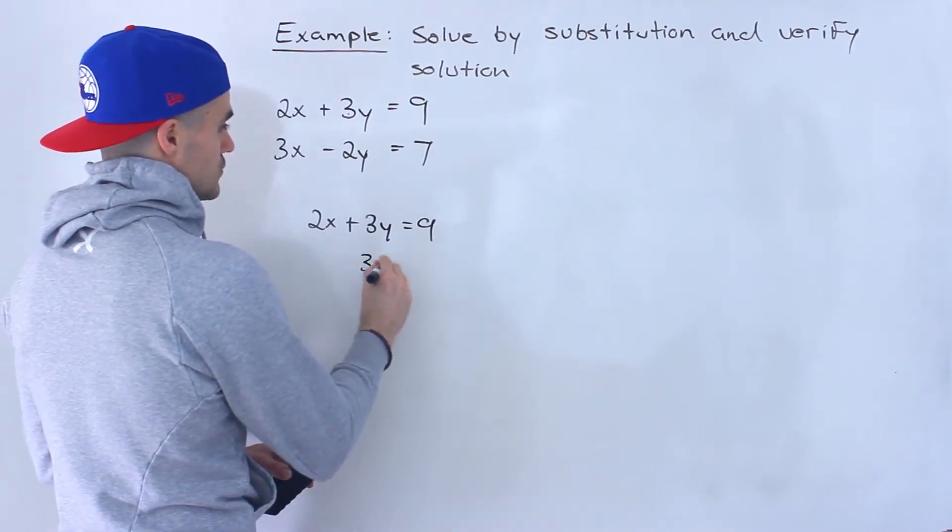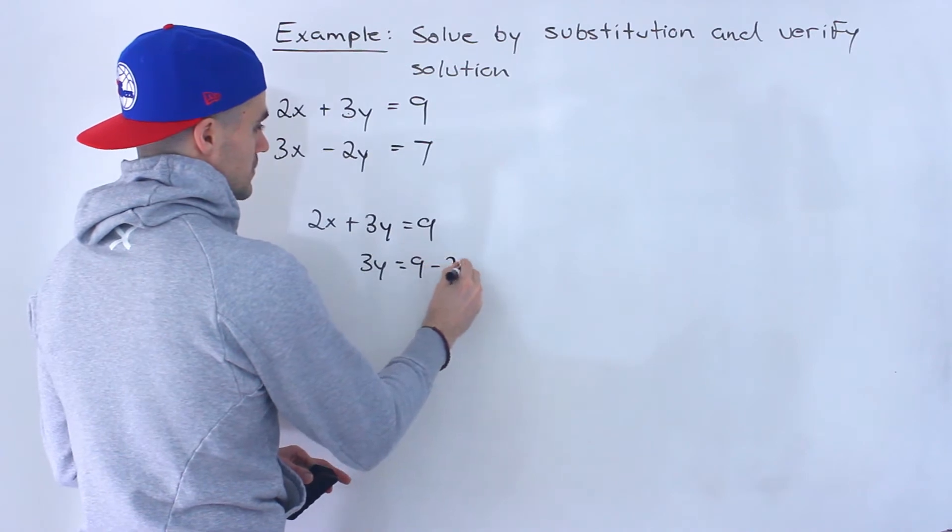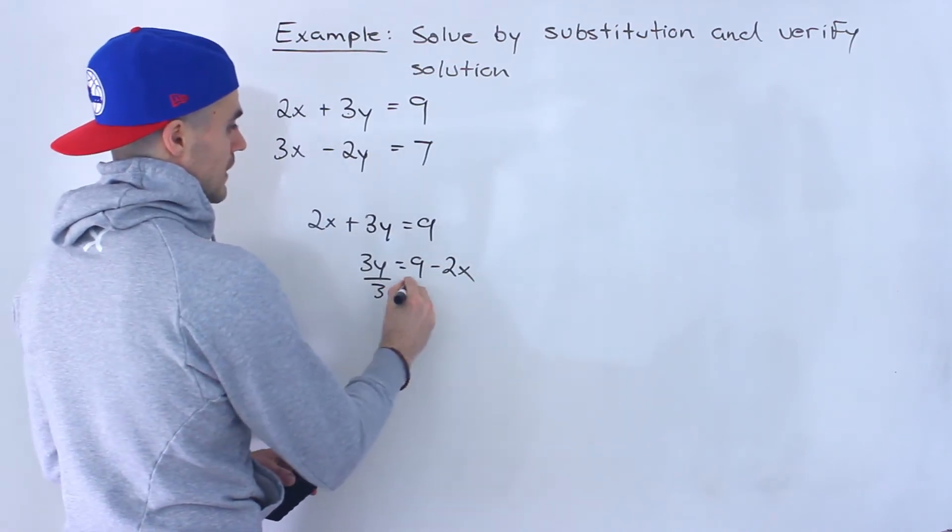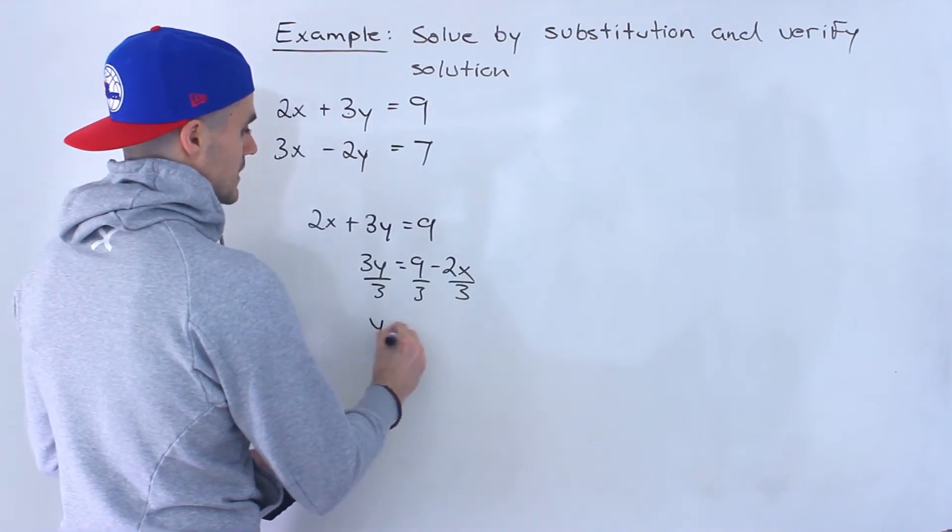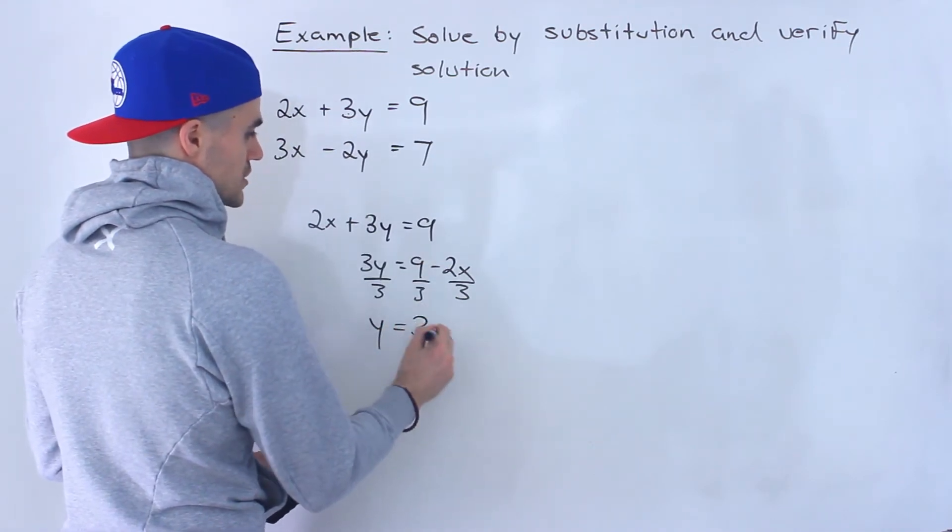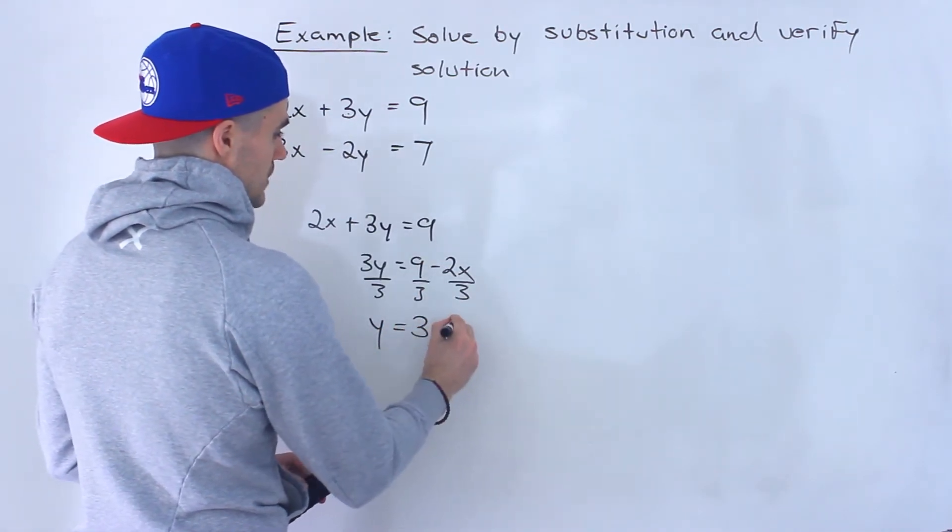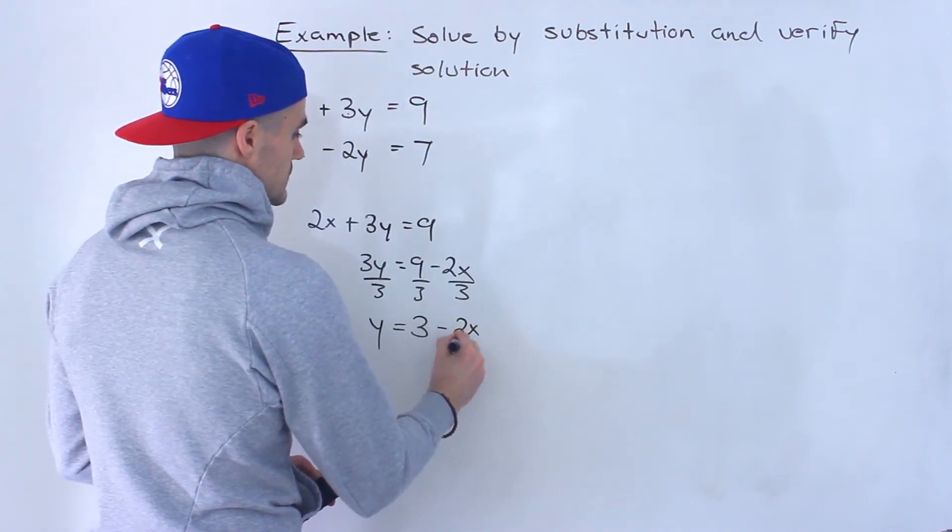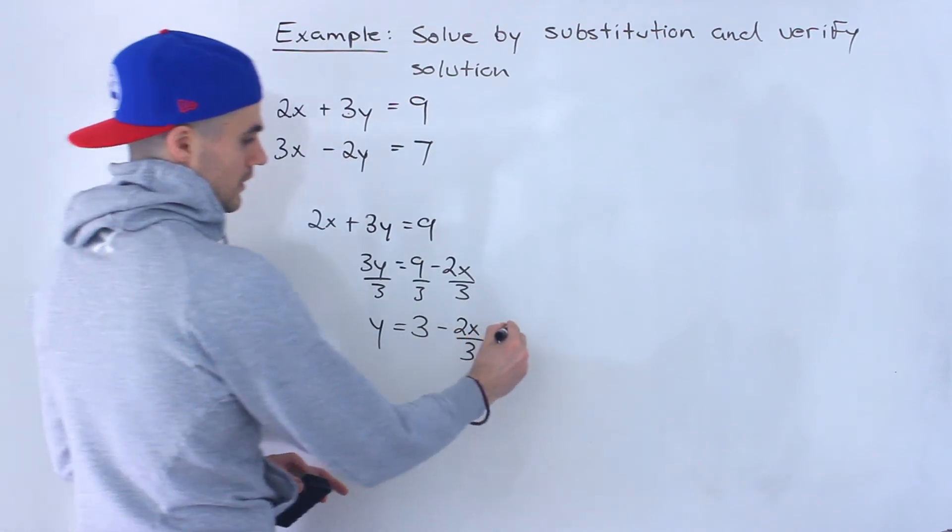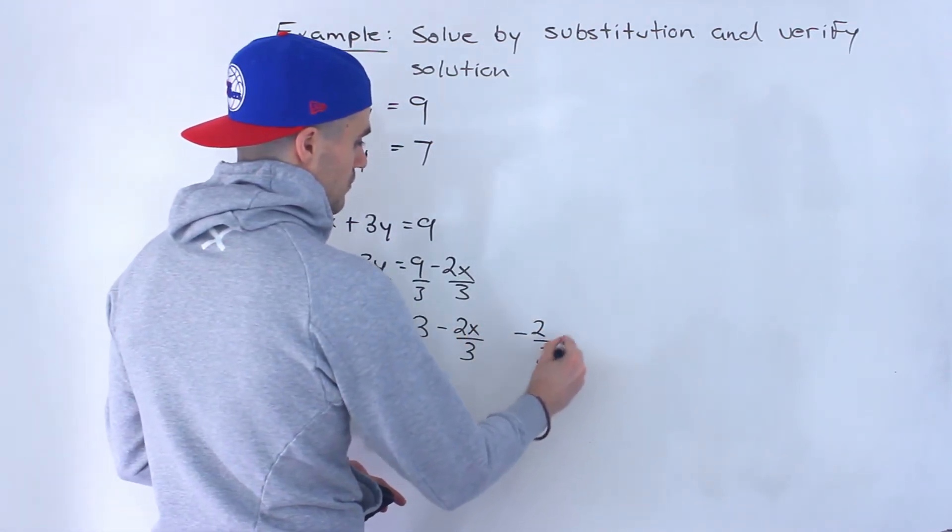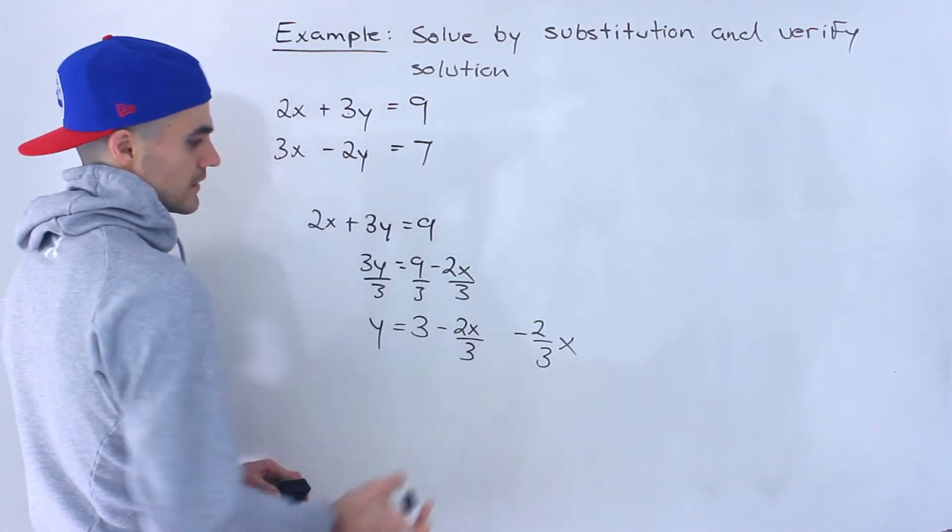So I'm going to bring the 2x over, it's going to become minus 2x, and then I'm going to divide everything by 3. So we would end up having y equals 9 divided by 3, as I mentioned, is 3. And then this would be 2x, minus 2x over 3. Or another way you could write is minus 2 over 3x. I'll just write it like this for now.